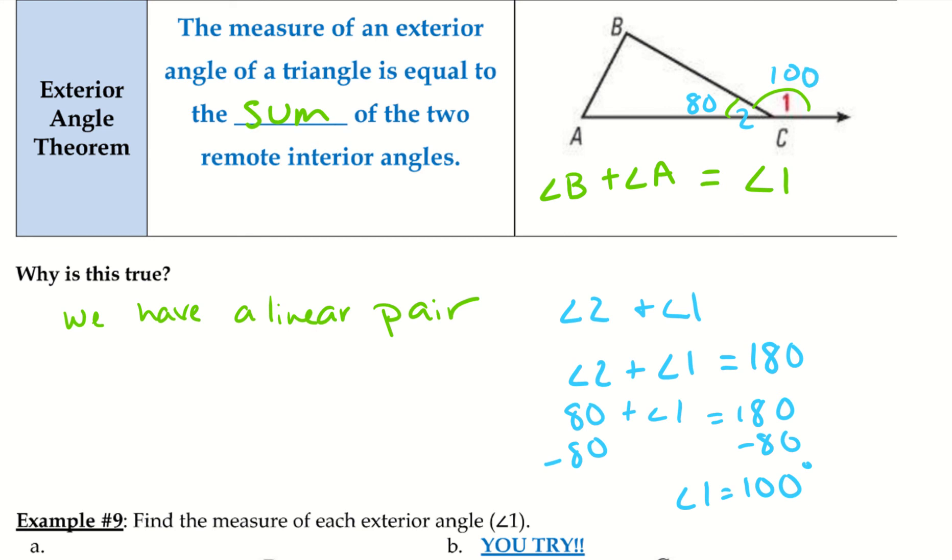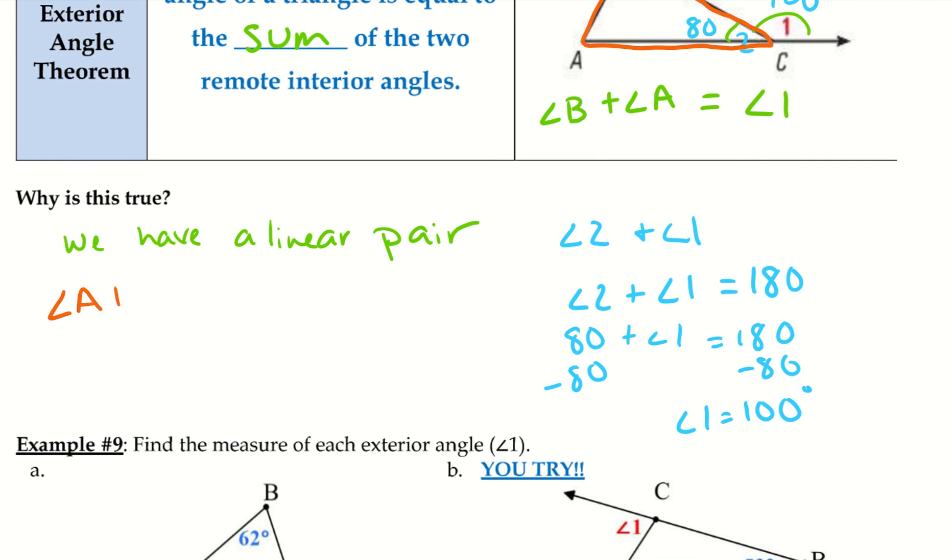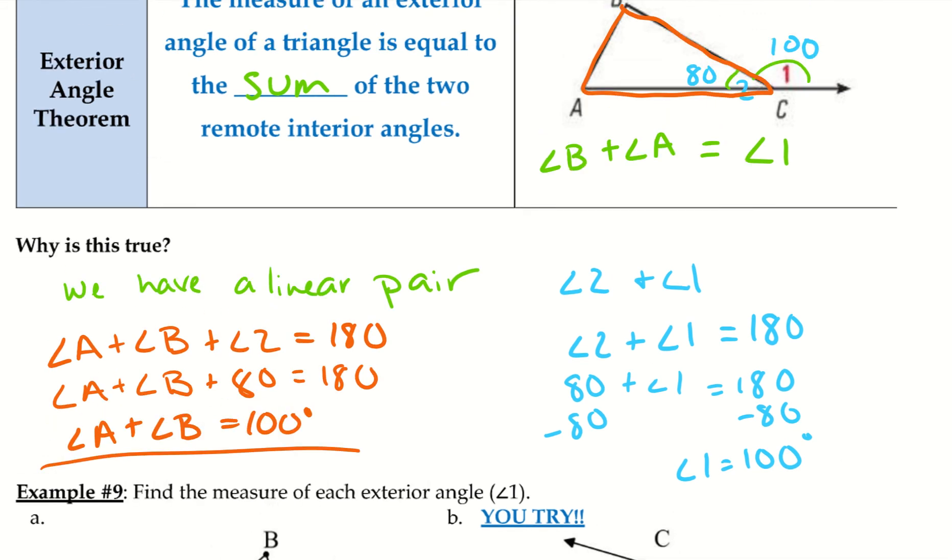So now let's pay attention to just the triangle. I'm not going to worry about the exterior angle at the moment. We have angle A and angle B. So I know that angle A plus angle B plus angle 2, so I renamed that since C was kind of broad, equals 180. Angle A plus angle B, angle 2 is 80 degrees, so go ahead and plug in 80 there. And if I subtract 80, I now have angle A plus angle B equals 100 degrees. So now we can see that angle A plus angle B equals 100, and if angle 1 equals 100, then therefore angle A plus angle B equals angle 1.